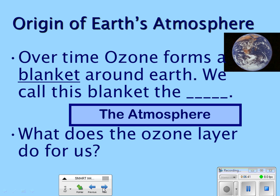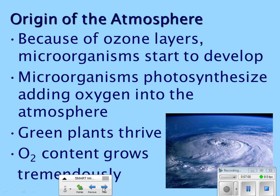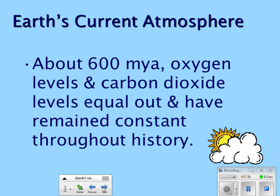What does the ozone layer do for us? It absorbs UV rays. It's very important to know that the ozone layer absorbs the UV rays — it does not reflect them, it absorbs them. Because of the ozone layer, microorganisms start to develop. The microorganisms photosynthesize, adding oxygen into the atmosphere. Plants give off oxygen, so the green plants were thriving and the oxygen content was growing. About 600 million years ago, oxygen levels and carbon dioxide levels equaled out and have remained fairly constant throughout history.